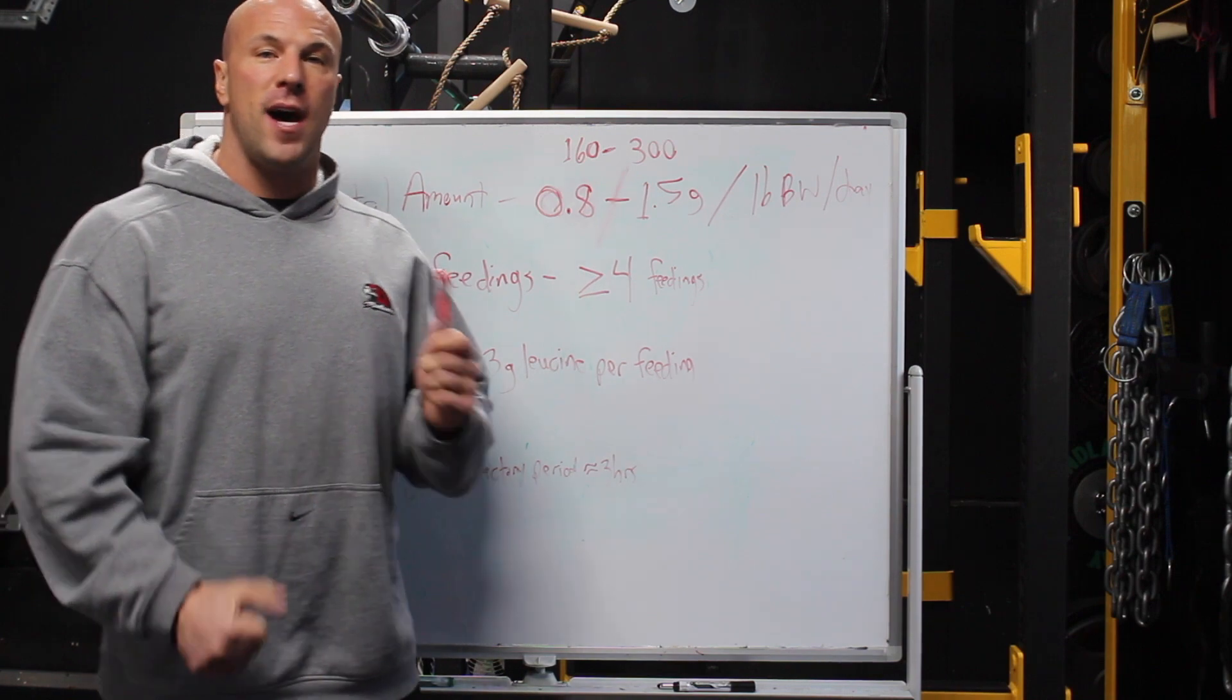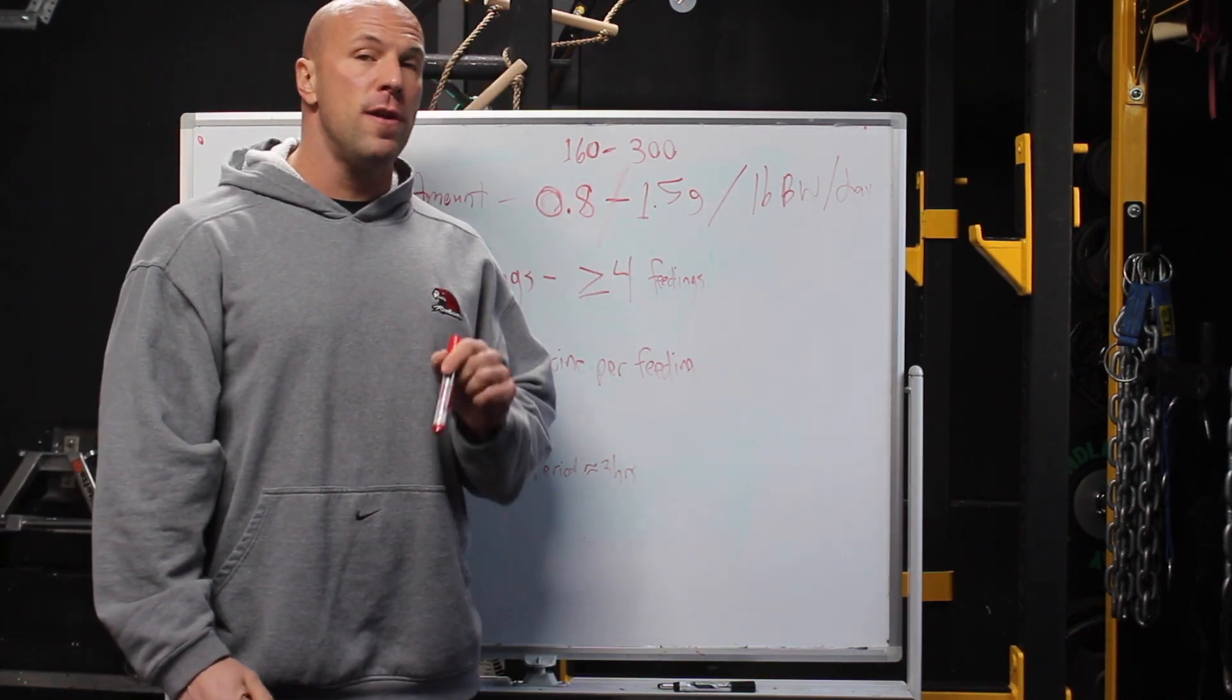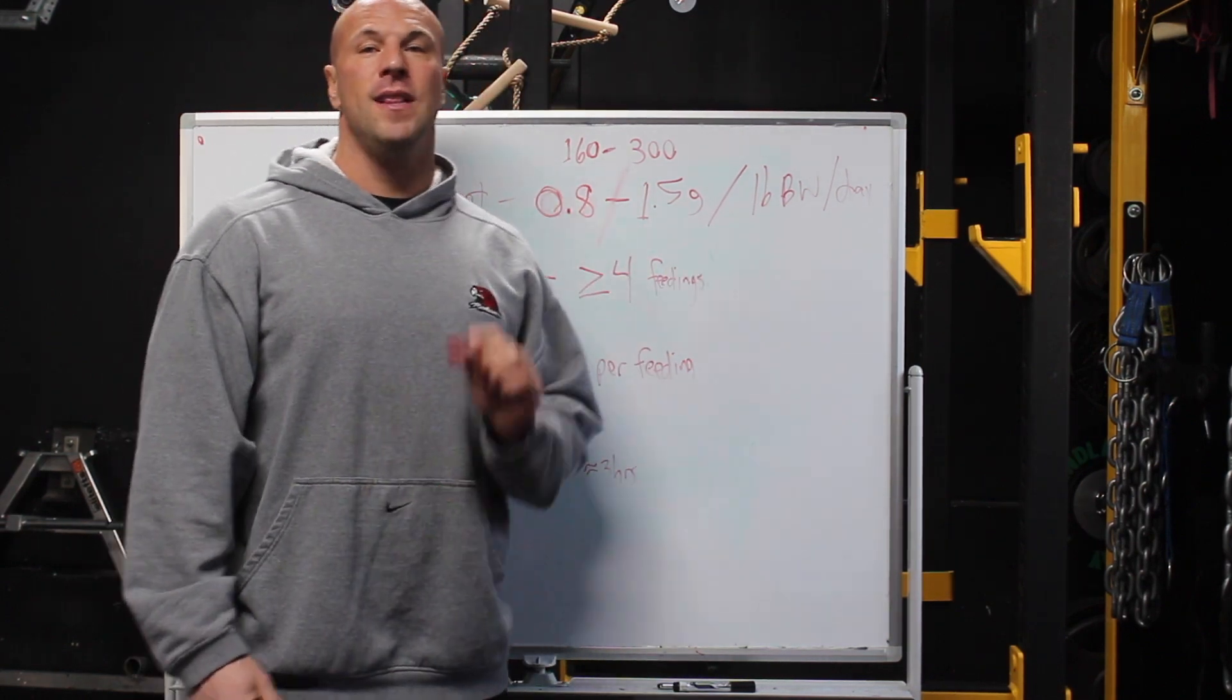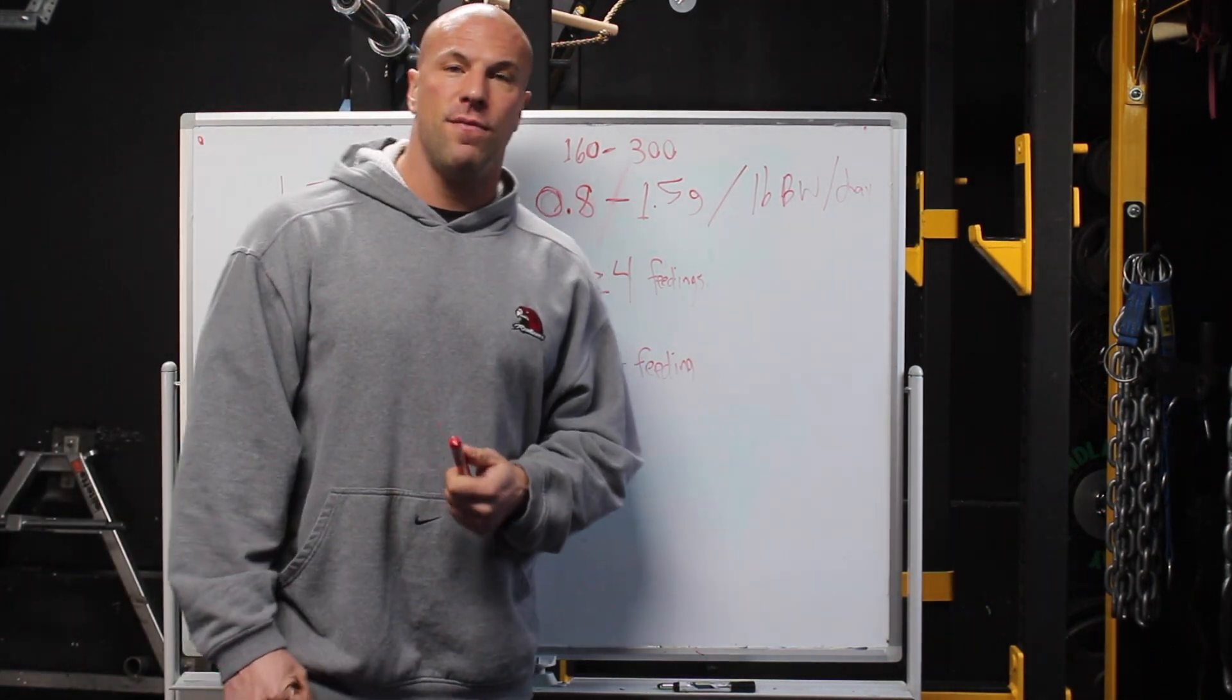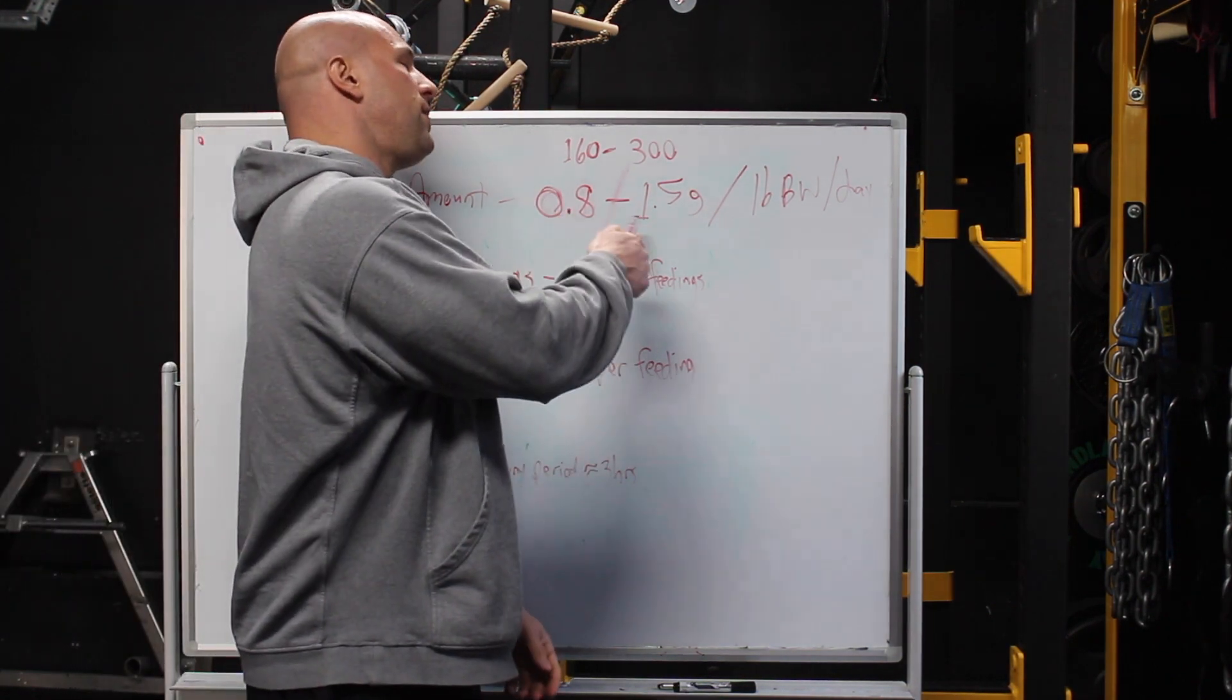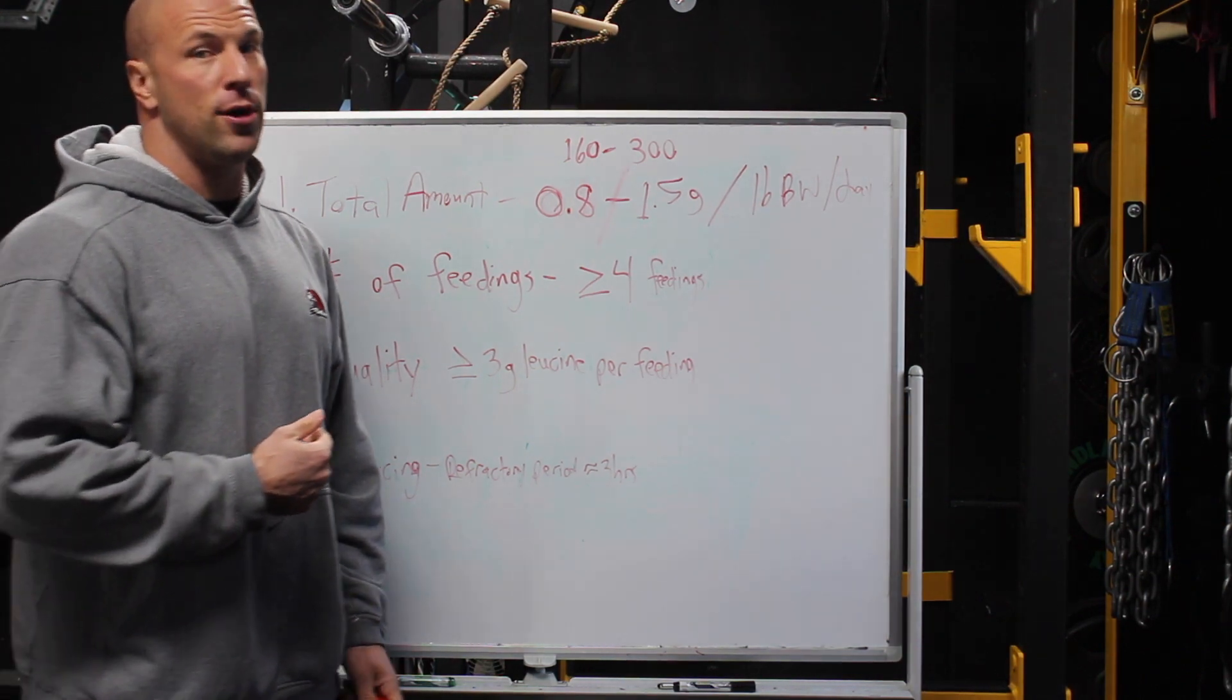The caveat to this is if you have high body fat levels. If you're over 25% body fat as a male or over 30% as a female, you want to take this calculation based on your pounds of lean body mass instead of total pounds of body weight. So a 200 pounder that's 25% body fat is going to have 150 pounds of lean mass, so you're going to use 150 to make those multiplication equations to figure out your total protein intake per day.